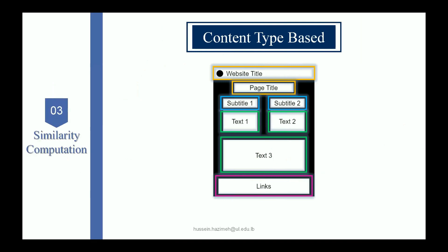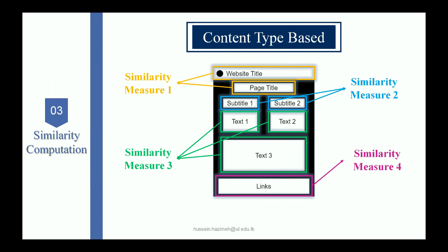For the similarity algorithms, we start with the website structure. For website title or page title, where the text size is usually three to ten tokens, we leverage one specific similarity metric. For content like paragraphs composed of multiple sentences, we employ another similarity metric. For links, composed of usually one word, we also employ a particular similarity metric.